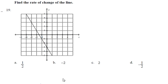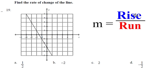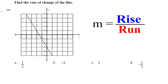Number 19 asks you to find the rate of change of the line. Every time you have a graph, you use M equals rise over run. The first thing that you do is...